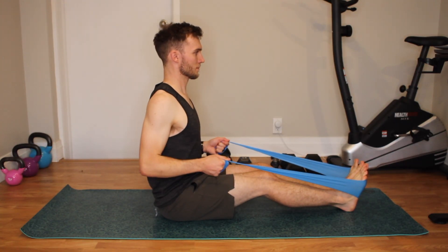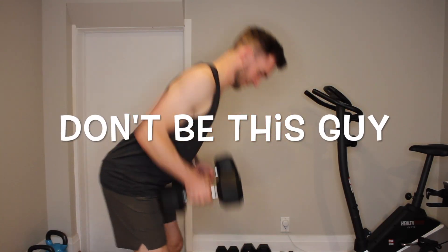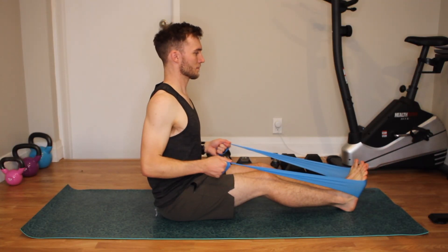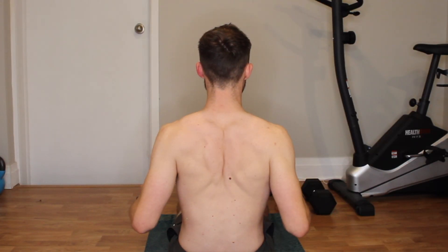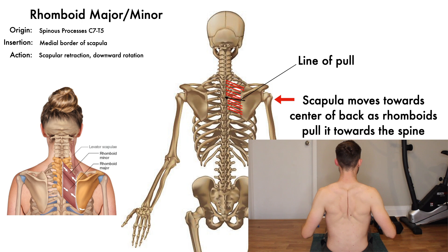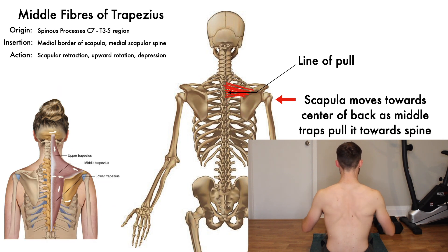The row is an exercise that gets done a lot, and not always with the best technique, which can really minimize the targeted benefits. With a row exercise, the focus is bending the elbows to the side while squeezing the shoulder blades together. As you'll notice, the scapula move from a protracted position at the start to a retracted position at the end. The rhomboids and middle fibers of trapezius should be really active in the row, as they pull the shoulder blades back towards one another. The biceps will also be involved since the elbow is bending during the movement.